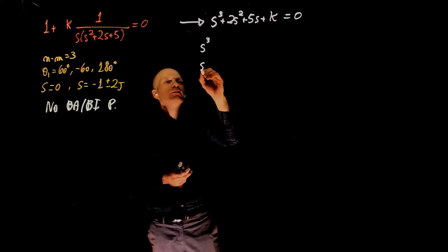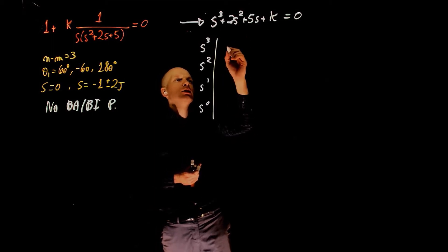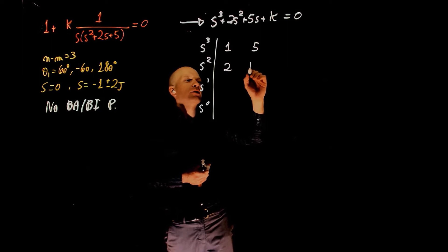We can now proceed with the Routh-Hurwitz array. That starts at the power of 3, 2, 1, and 0. And the coefficients of s's here are 1, 2, 5, and k.